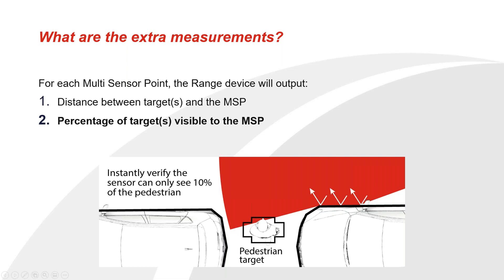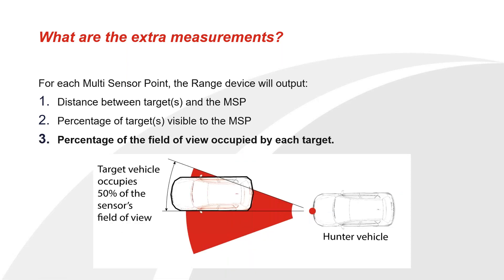Other target polygons can obscure the view of other targets. Here you can see that this parked car is taking up some of the field of view of the multi-sensor point, only allowing a tiny bit of the pedestrian to be seen - you can compare the RT Range measurement with your sensor as well. The last extra measurement from enabling multi-sensor points is the percentage of field of view occupied by each target - as it says, how much of your field of view is occupied by a particular target. In the example you can see that half of this angle is occupied by this target, so you've got 50% occupation.